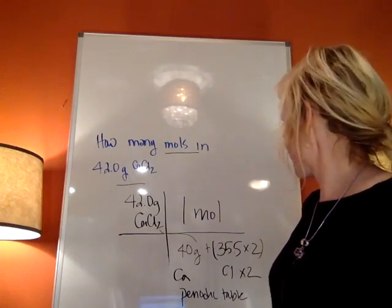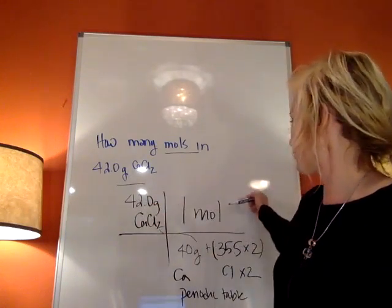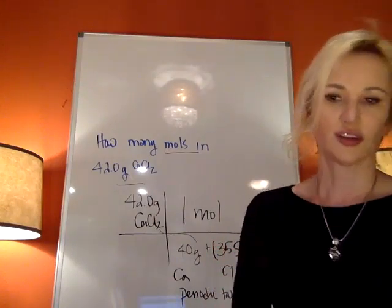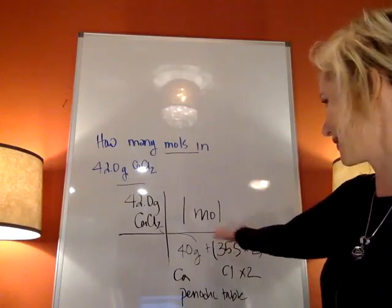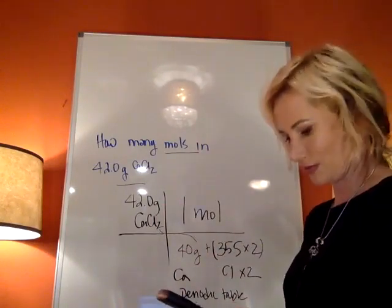Whatever mass you find is divided into whatever number you started with, and it's always paired with one mole. Just like Avogadro's number is always paired with one mole, your molar mass will always be paired with one mole.